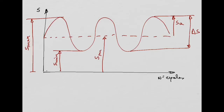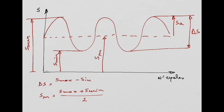Mathematically, stress range is delta S = S_max minus S_min. Mean stress S_M equals (S_max + S_min) / 2. Stress amplitude S_A equals (S_max - S_min) / 2, or equivalently, the stress range divided by 2. These are the basic stress measures we need for a fatigue problem: maximum, minimum, mean stress, stress amplitude, and stress range.